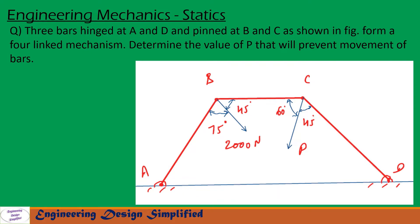In this problem, a four-bar mechanism is given where links AB and CD are hinged at those points, AD is the fixed link, and links AB and CD are pinned at points B and C. A force of 2000 newton is applied at an angle of 75 degrees from one link and 45 degrees from the other. When this force is applied, it tries to rotate link AB, causing the mechanism to move, and link CD also tries to rotate in the clockwise direction.